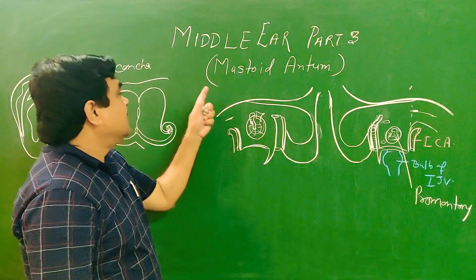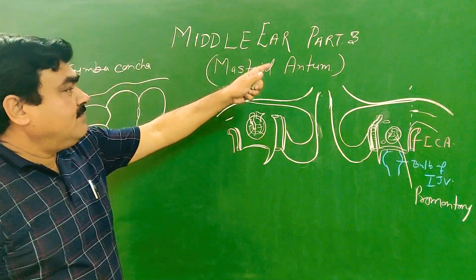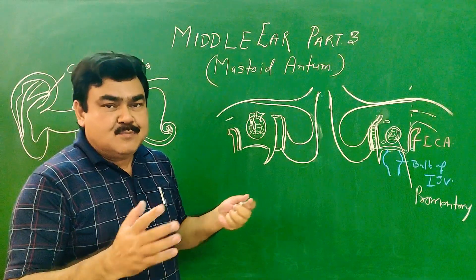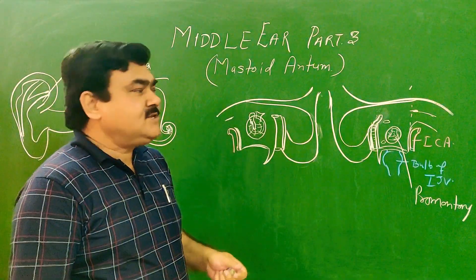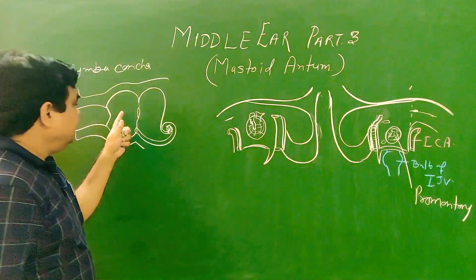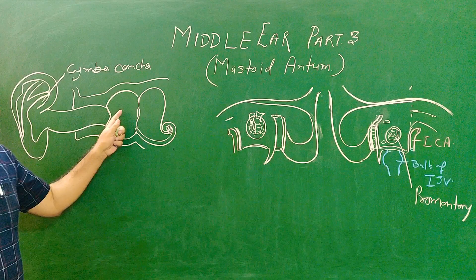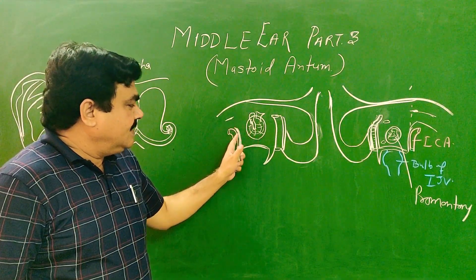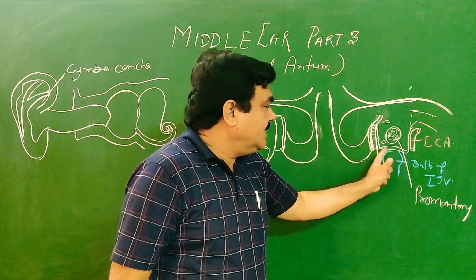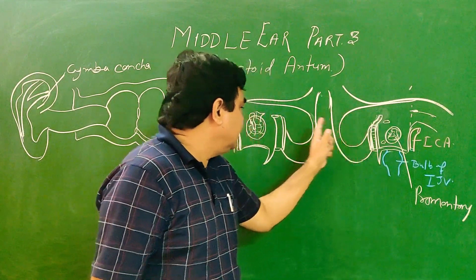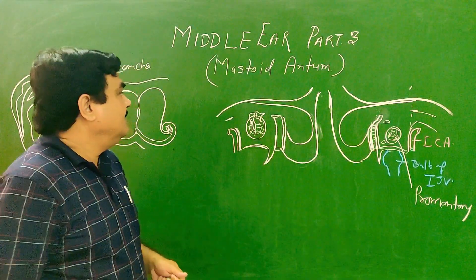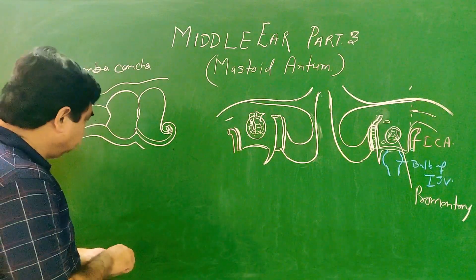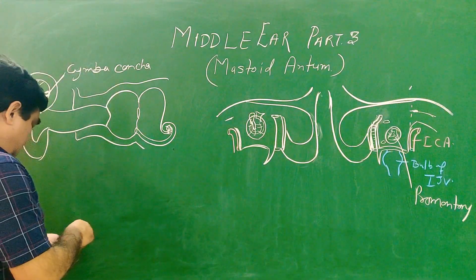We will discuss the middle ear Part 3. In this part we will discuss the posterior extension of the middle ear. This cavity is the middle ear, and its posterior extension is known as the mastoid antrum.